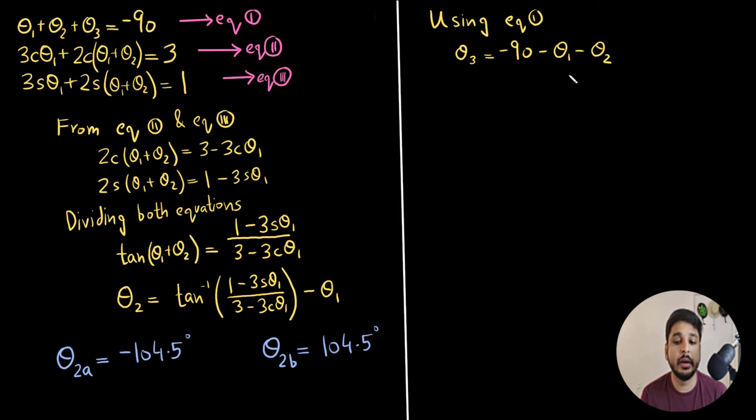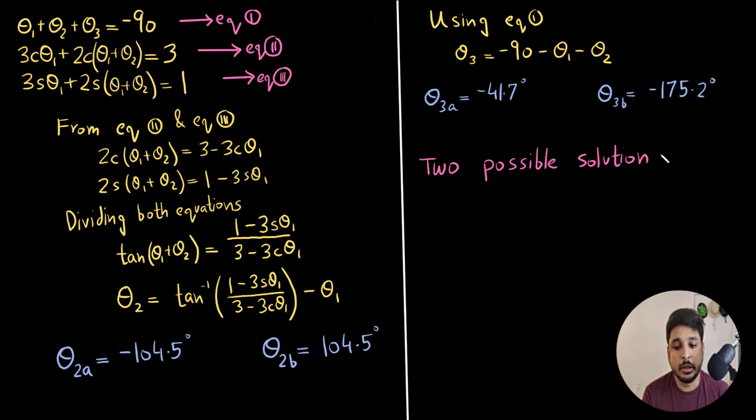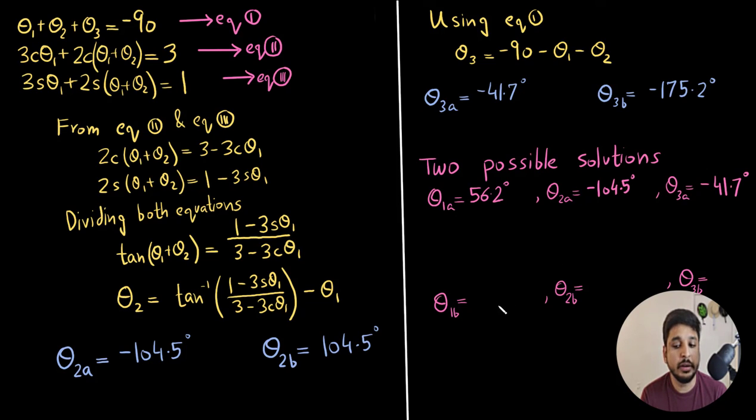Similarly, using the third equation, I get two values of theta 3a and theta 3b. So at the end, I get two possible solutions. The first solution has theta 1 as 56.2 degrees, theta 2 as minus 104.5 degrees and theta 3 as minus 41.7 degrees.